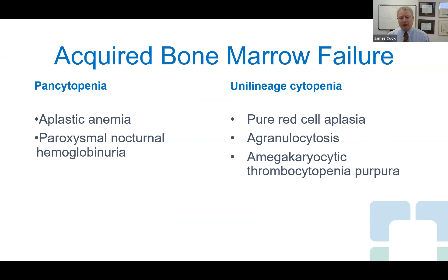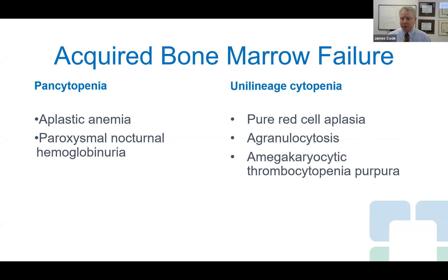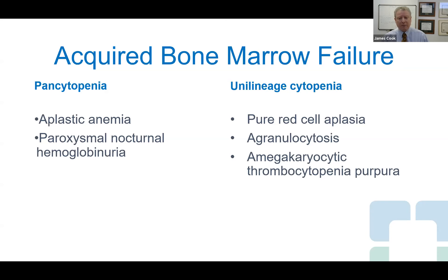What we see under the microscope is an important part of how these disorders are diagnosed, but it's really only one piece. We have to put that together with what colleagues in clinical hematology find on physical examination and careful history. We also look at other laboratory testing, including routine blood tests and increasingly DNA-based testing, especially when looking for possible hereditary conditions. The most common acquired disorders include aplastic anemia and paroxysmal nocturnal hemoglobinuria, or PNH, which typically lead to pancytopenia.